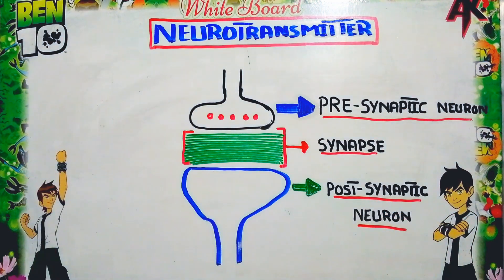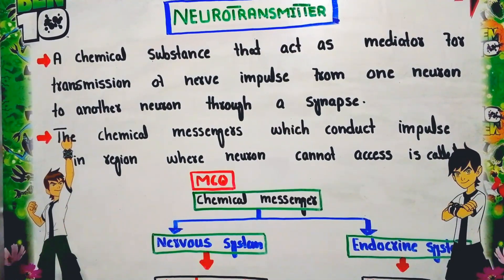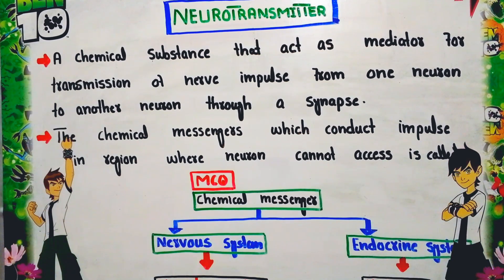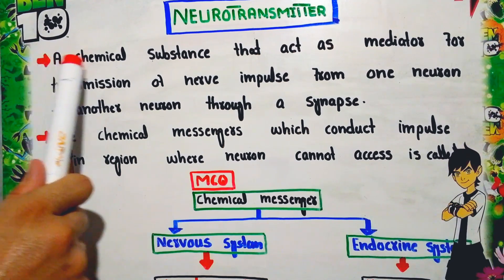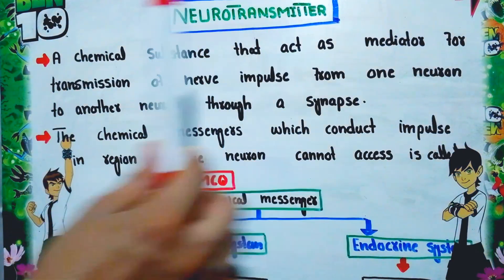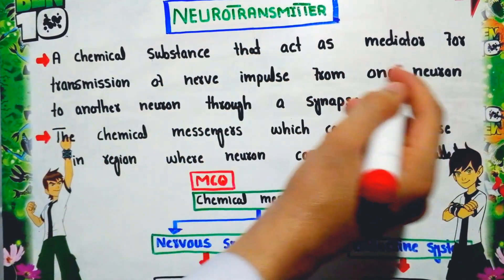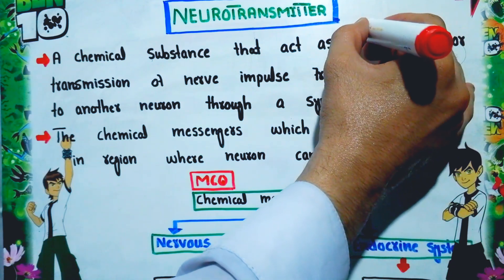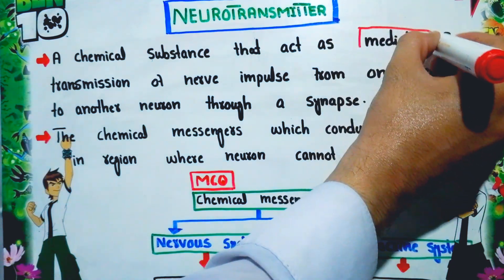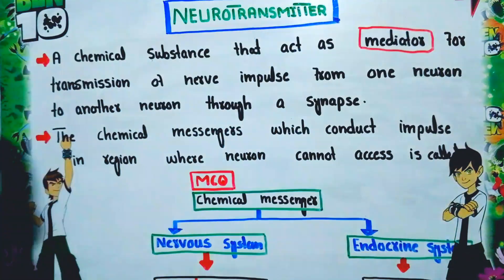Now let us discuss the definition of the neurotransmitter. A neurotransmitter is a chemical substance that acts as a mediator for the transmission of impulse from one neuron to another neuron through a synapse.